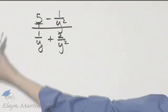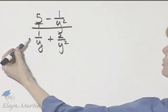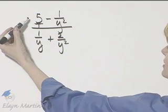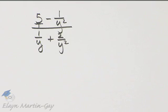I can multiply the numerator of this complex fraction by y squared and the denominator by y squared. Because I'm multiplying by y squared over y squared, that's the same as multiplying by 1, and I haven't changed the value of this expression.